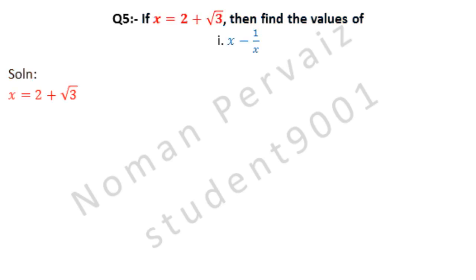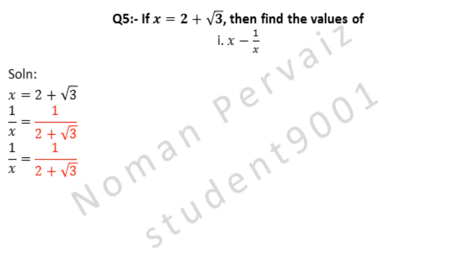As we are given with the value of x, which is 2 plus under root 3. We write the value of x. Now, look at part 1 — it contains the value of x and 1 over x. So, first we need to find the value of 1 over x. 1 over x is equal to 1 divided by the value of x.